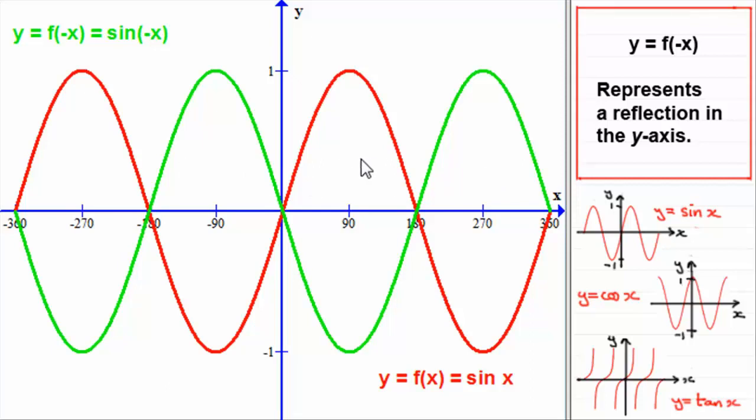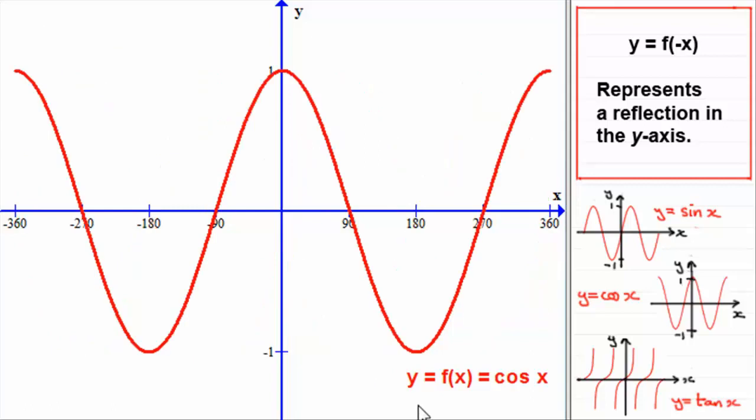OK, well, let's have a look now at y equals cos x. Now, here we have the graph then of y equals cos x. And I've let f of x be equal to cos x. And what we're going to do now is replace that x with a minus x. So we end up with y equals f of minus x, which is going to be the cosine of minus x.